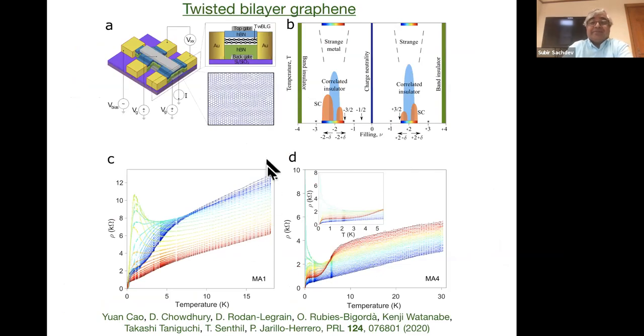This is the data in the most latest material, twisted bilayer graphene, which has superconducting phases spanning a correlated insulator. This is at nu equals minus two. If you look at higher temperatures here, especially on the hole-doped sides, you see a regime of resistivity that varies linearly with temperature.